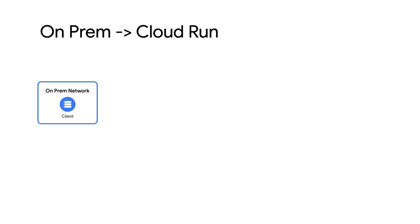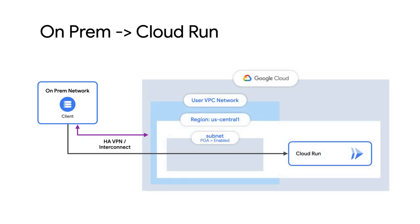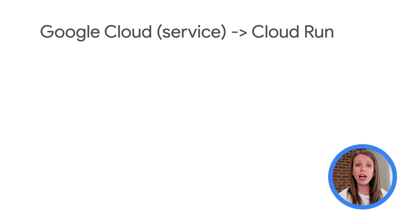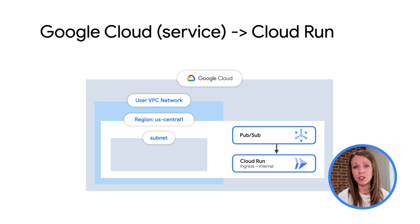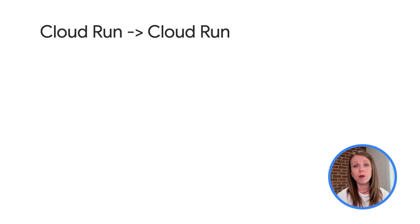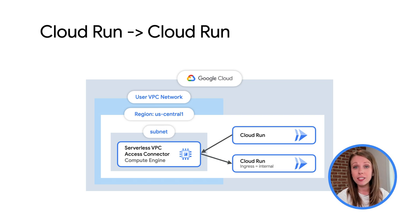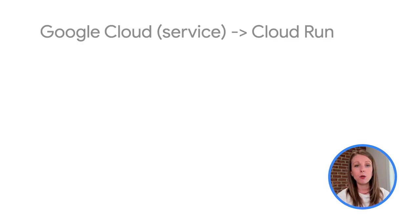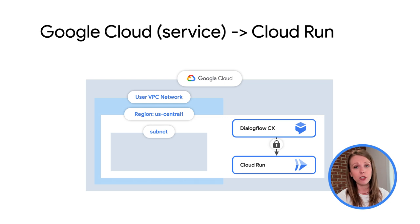Private Google access or private service connect can also be configured so that clients on-prem can connect privately over a hybrid connection to access a Cloud Run service. There are also scenarios where another Google Cloud service needs to send requests to Cloud Run. Requests from EventArc, PubSub, and Workflows in the same project or VPC service controls perimeter are recognized as internal and can access Cloud Run directly if the ingress is set to internal. Requests from another Cloud Run service, App Engine, and Cloud Functions in the same project or VPC service controls perimeter are recognized as internal only with the use of a serverless VPC access connector. Requests from other Google Cloud services not mentioned cannot use the internal ingress setting and must use service-specific authentication. However, Google Cloud is continuing to update the list of services that are recognized as internal.